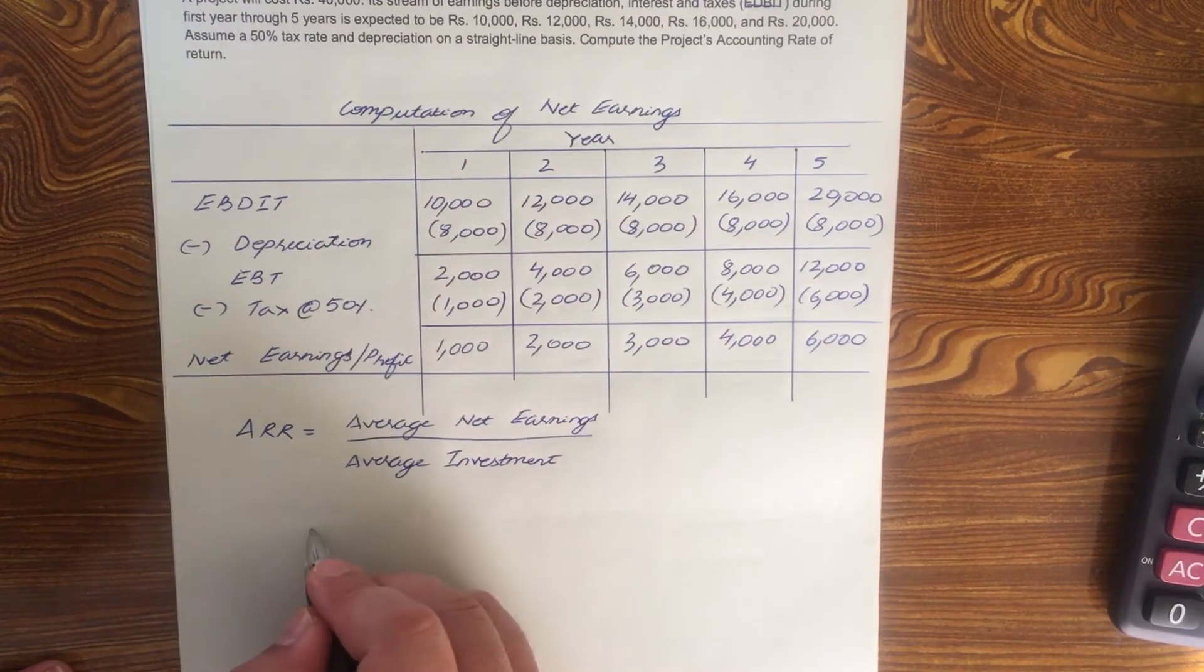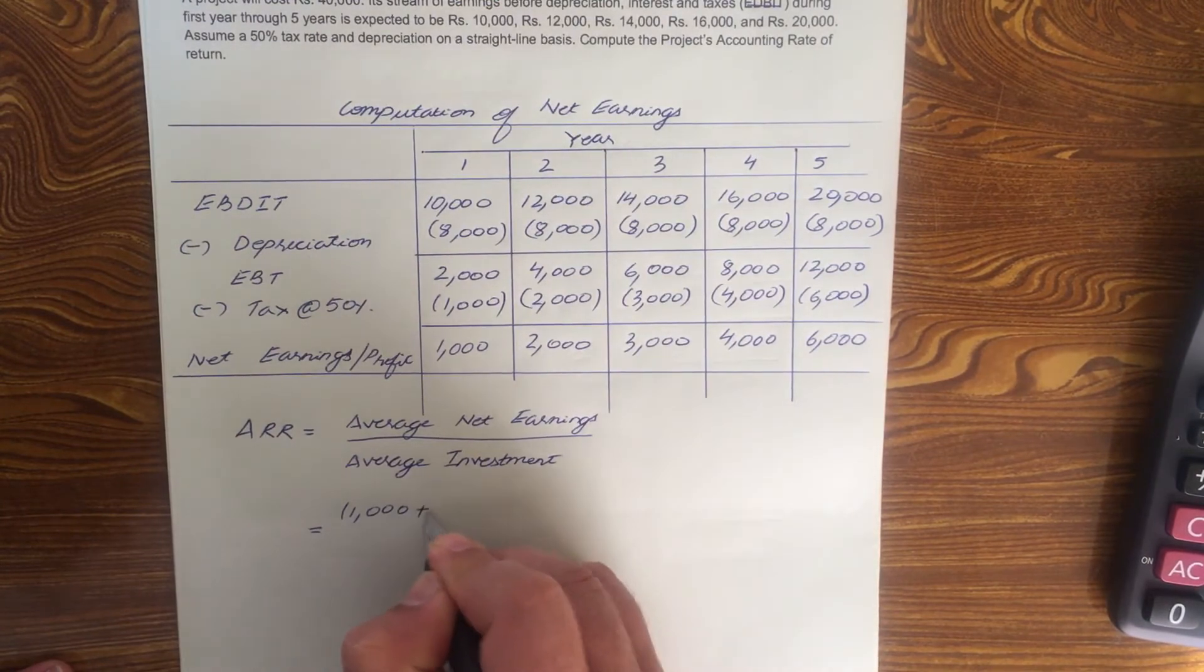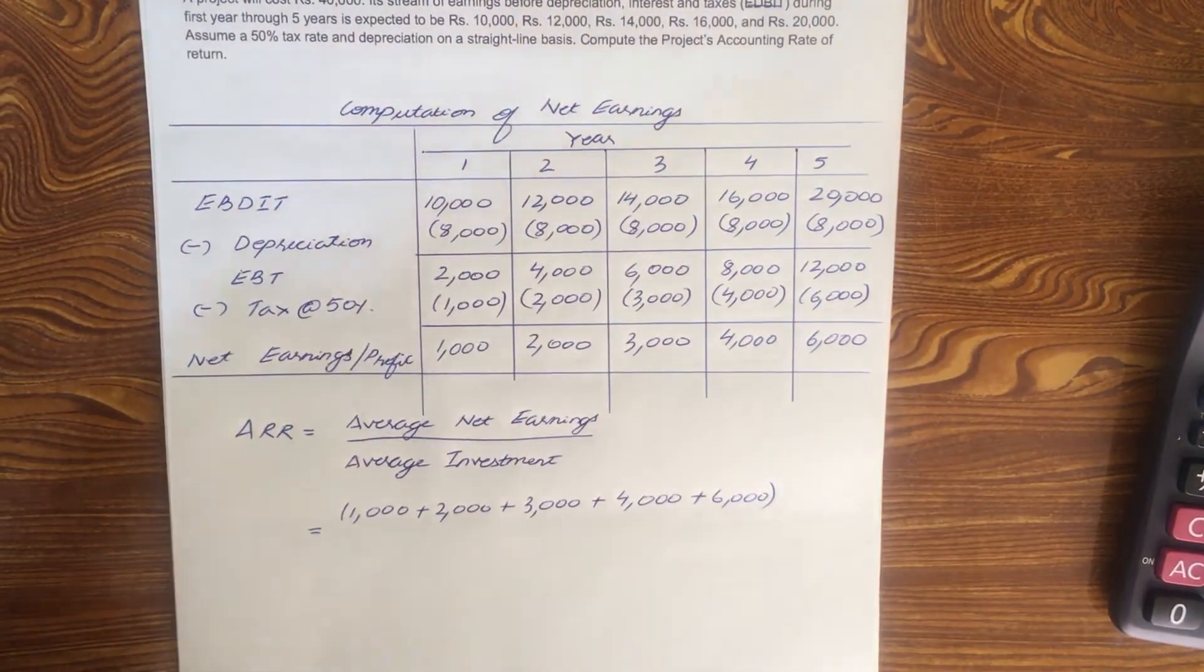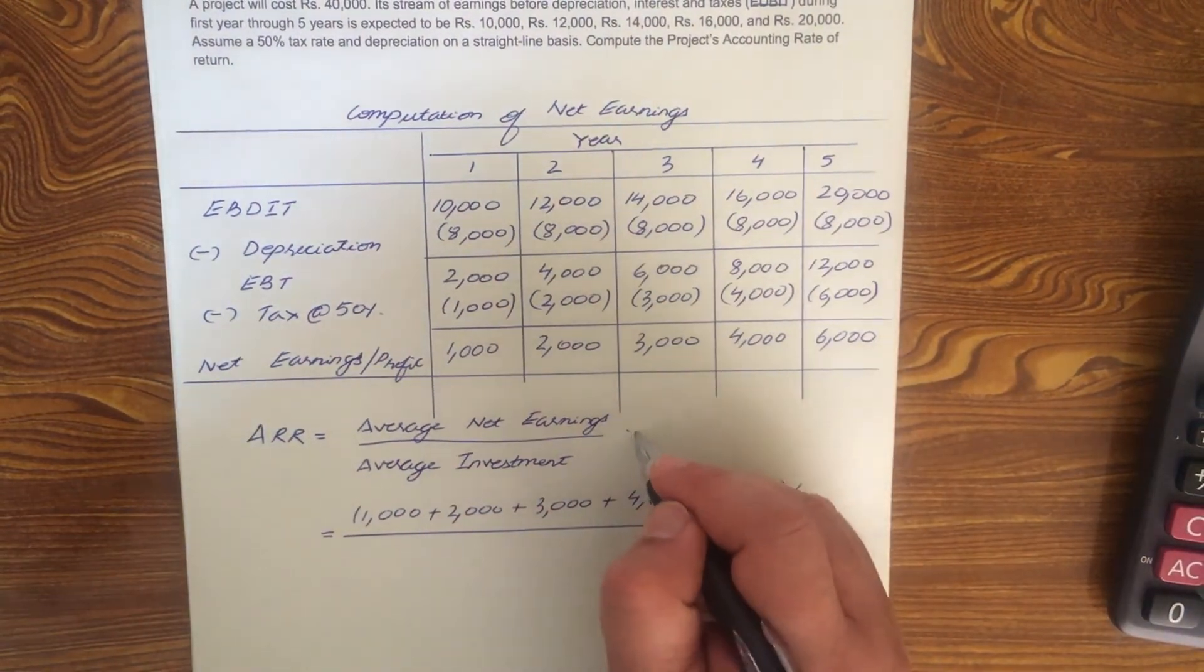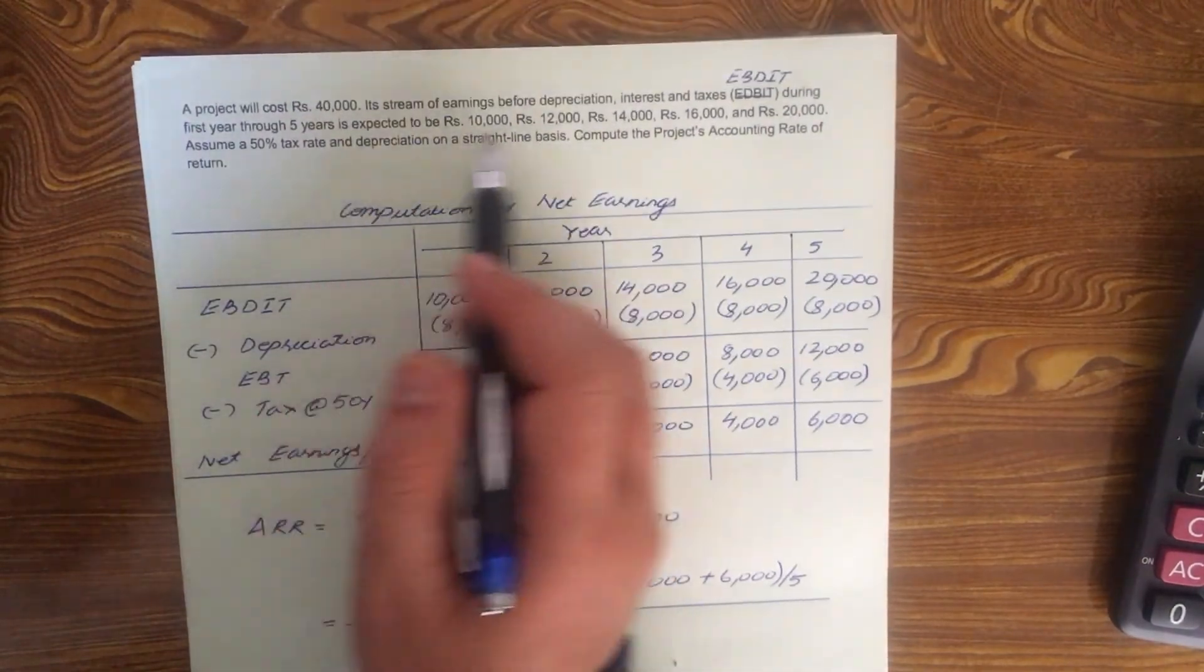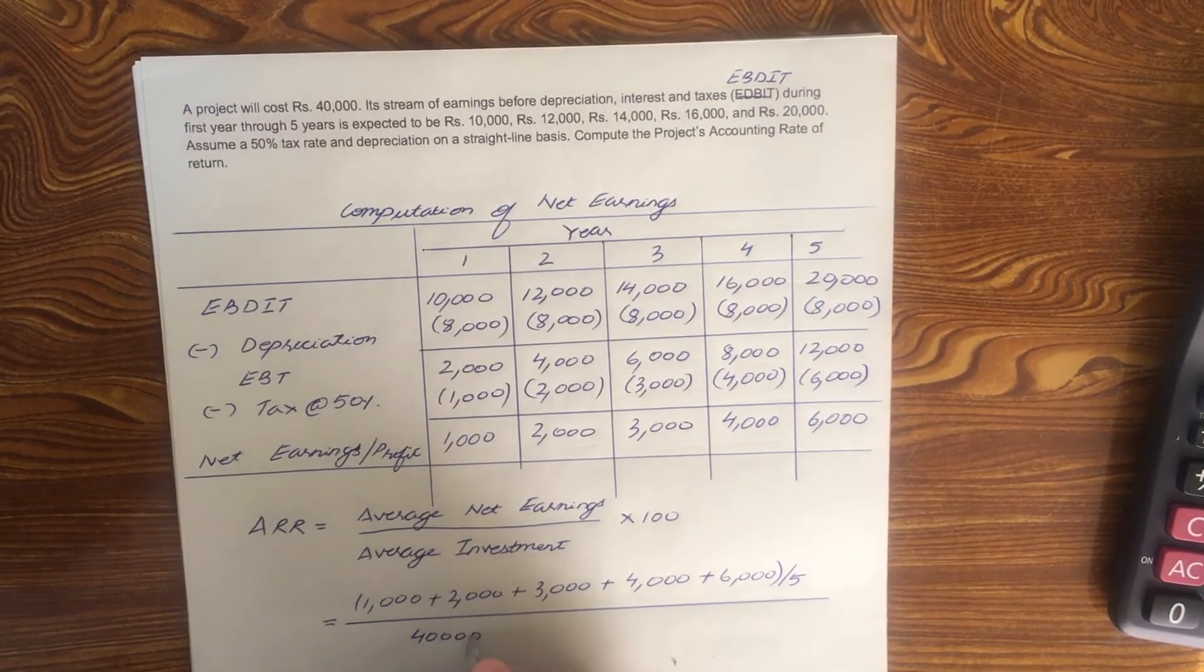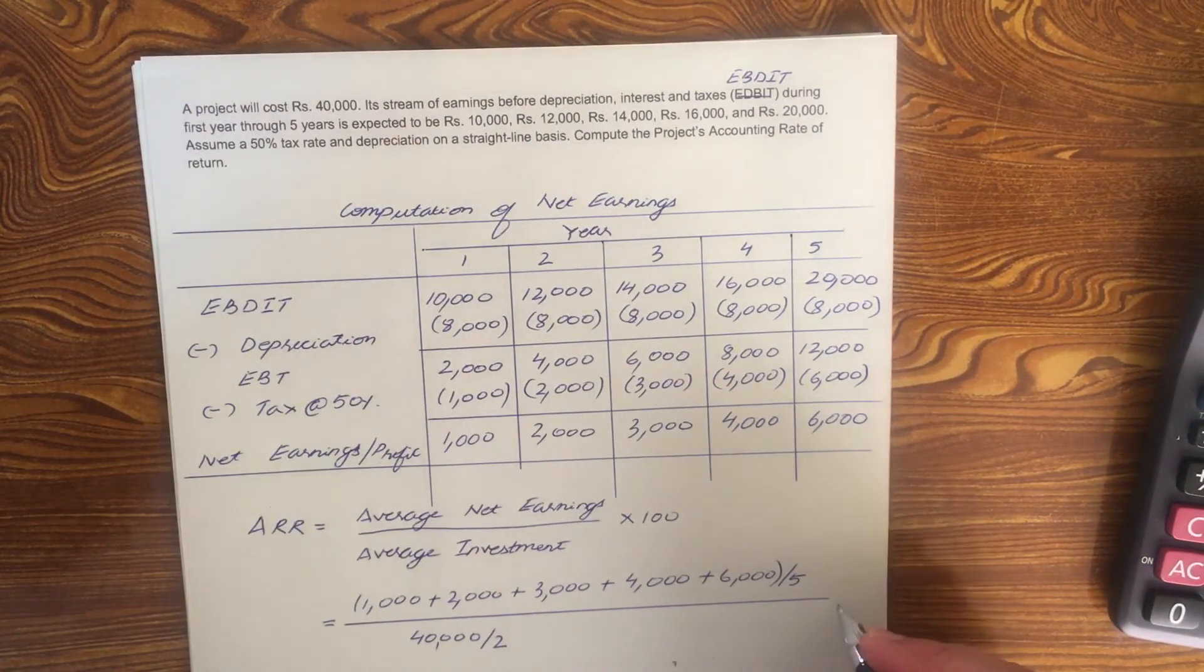What is the average net earnings? The average net earnings is 1,000 plus 2,000 plus 3,000 plus 4,000 plus 6,000 divide it by 5. By the way, this is 100. And your average investment, what is your average investment? Here, nothing is mentioned about scrap value or salvage value. So basically your average investment will be 40,000, the initial cost of the project divided by 2. If the scrap value is given, then you have to deduct scrap value and all that.